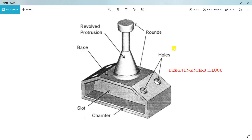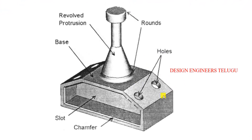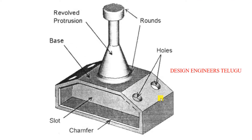Hi all, welcome to Design Engineers. In this class we will discuss how to create this object. To create this object we have to use three main operations: first one is the base, second operation is the revolved portion, and then we have to make a slot. These are the three main operations, and then we have to make some holes, fillets, and chamfer.